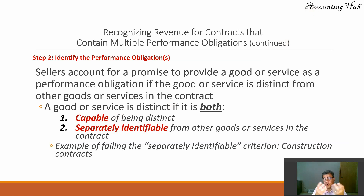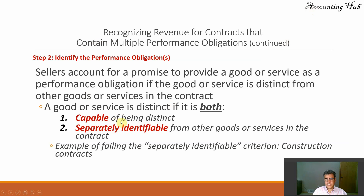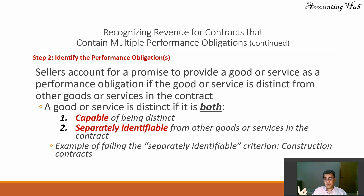So I am purchasing one vehicle, so it is a single performance obligation. I go to a grocery store and purchase a lot of stuff — it is very easy, but it is a multiple performance obligation. I'm capable of being distinct, and on my receipt, they are separately identifiable. Example of failing the separately identified criteria: construction contracts. I am constructing a new house — not the wall, the door, the floor, and so on.